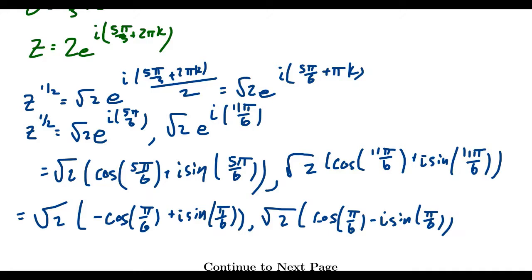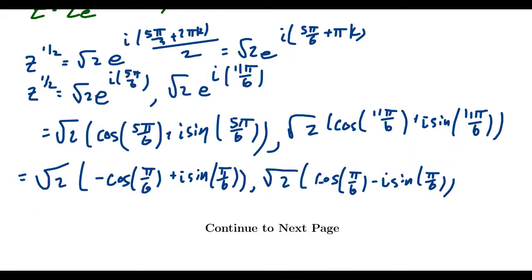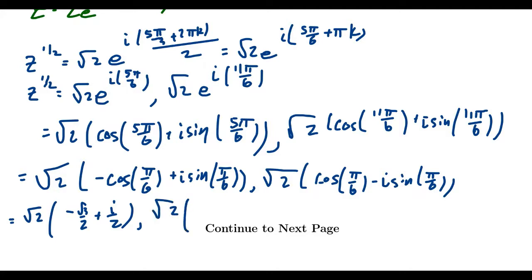Whenever you take square roots, the other square root is the additive inverse of the principal square root — notice the signs are opposite when comparing the two. Cosine of pi over six is root three over two, and sine of pi over six is one half. So we get the square root of two times (negative root three over two plus i over two) for the first root, and square root of two times (root three over two minus i over two) for the second.